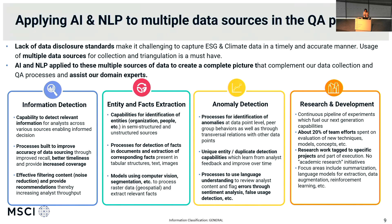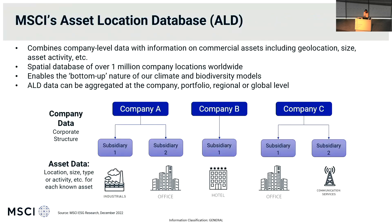Let me turn to another foundational data input for climate risk analysis — and that is the locations of the physical assets owned by thousands of companies in a diversified investment portfolio. As modeling around physical climate risks improves, none of those modeling improvements would matter very much for a large diversified portfolio if you don't have high-quality bottoms-up data on the locations of physical facilities. And very importantly, you need the structural characteristics of those facilities tied to a company's revenues and production capacity at each facility — which is why at MSCI we've also had to invest a lot in building an asset location database.